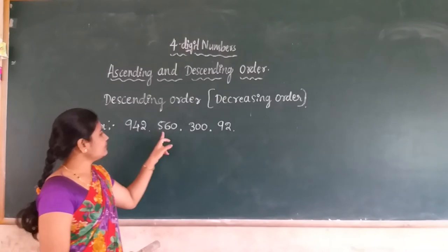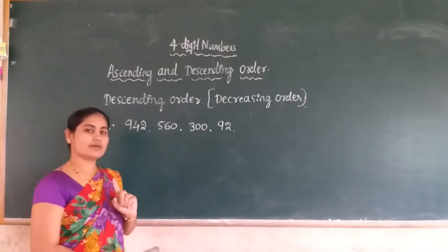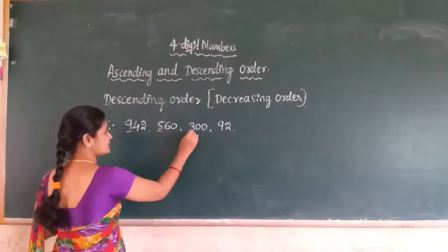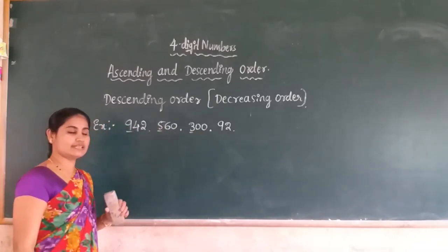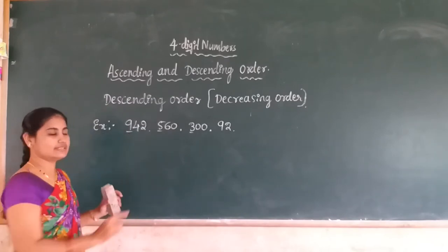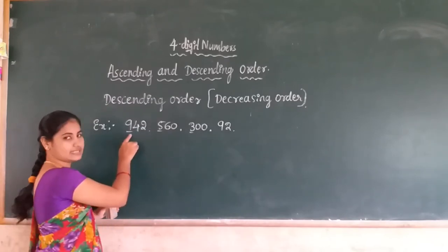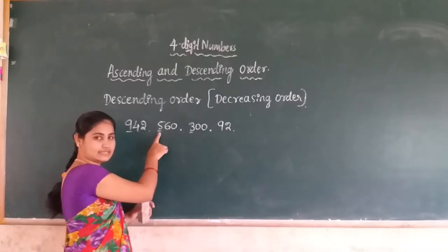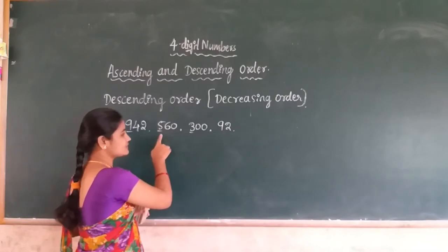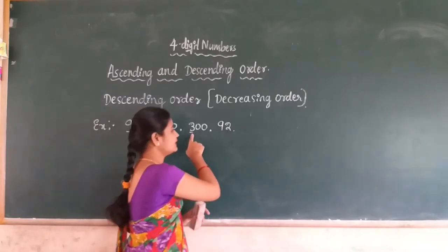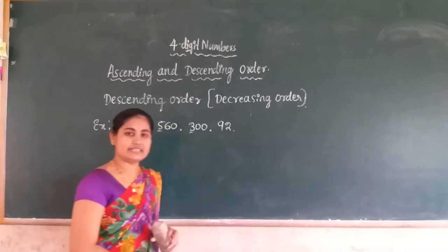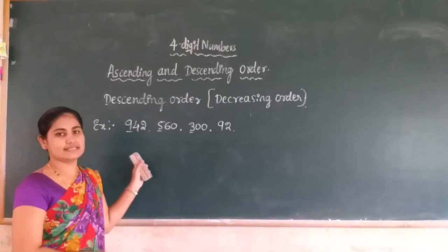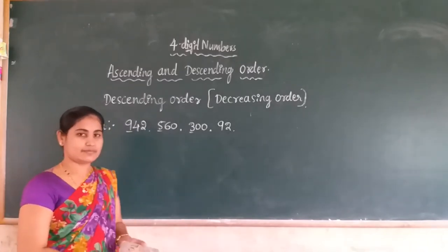The remaining numbers all have 3 digits. You compare the numbers in the hundreds place: 9, 5, and 3. Since 9 is the highest, 942 is the greatest number. 942 is greater than 560, 560 is greater than 300, and 300 is greater than 92. This type of arrangement we call it as descending order or decreasing order of the numbers.